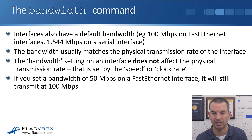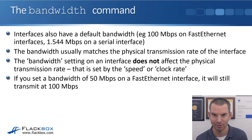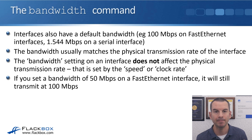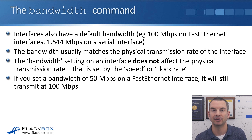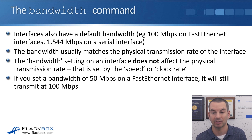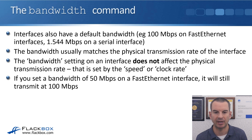That was the speed and the clock rate commands, which do change the physical transmission rate of interfaces. Next up, we have the bandwidth command, which does not. Interfaces also have a default bandwidth — for example, 100 megabits per second on fast Ethernet interfaces and 1.544 megabits per second on a serial interface. You can see that defaults to what the speed and clock rate default to as well. The bandwidth does usually match the physical transmission rate of the interface, and normally as the administrator, we want to leave it at that.